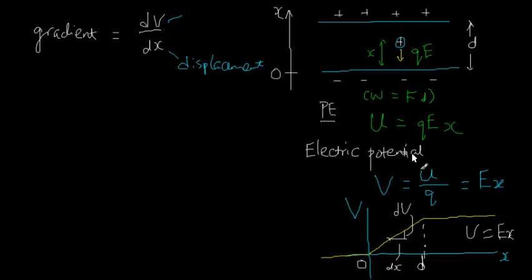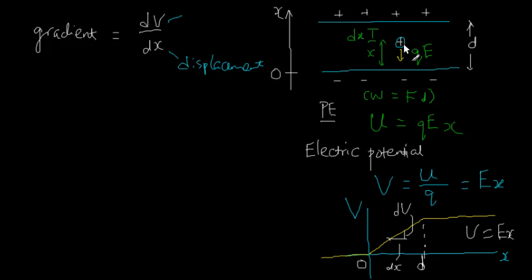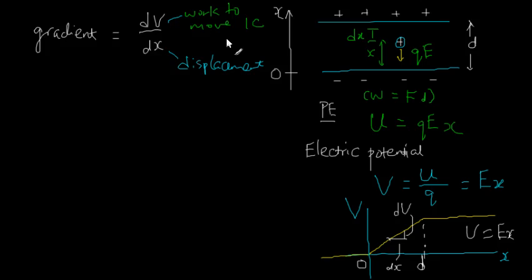The electric potential is just the work done on a unit charge. So dv is the work done to move the charge over a small distance. If we are here at a certain x and we want to move it by a small distance dx, I need to do some work. That's the dv — dv is the work to move a unit charge. In SI units, it could be 1 coulomb, by this small distance dx.